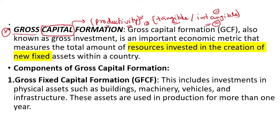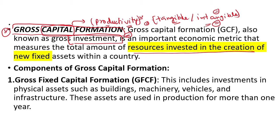Now we will study what Gross Capital Formation is. Gross Capital Formation, also known as Gross Investment, tells us the amount of resources invested in the creation of new fixed assets within a country. This is about new fixed assets — tangible things you have invested in your country that contribute to productivity.